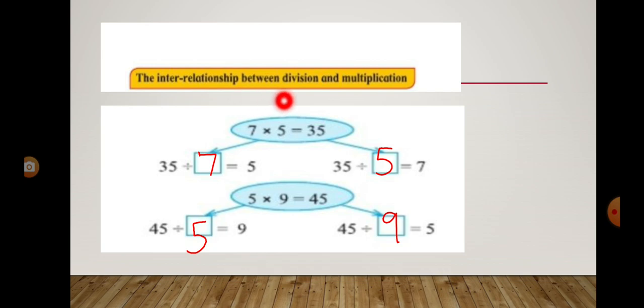The interrelationship between division and multiplication. Now 7 multiplied by 5 equals 35. So 35 divided by 7 equals 5 and 35 divided by 5 equals 7. The same way, 45 divided by 5 equals 9 and 45 divided by 9 equals 5.